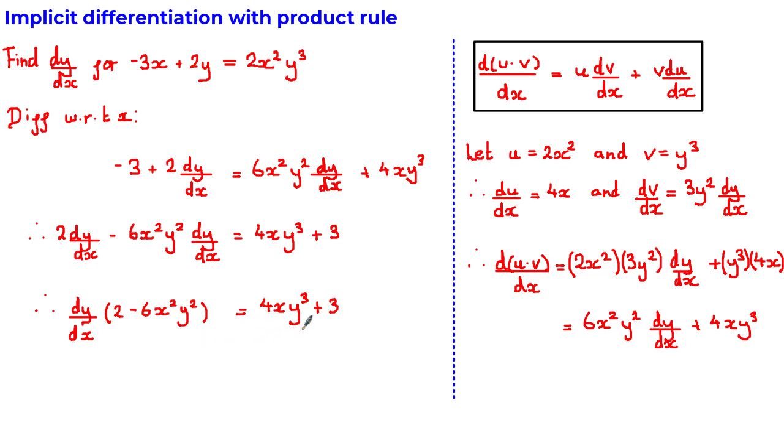And to find dy by dx, all we need to do is divide both sides of the equation by 2 minus 6x squared y squared to get dy by dx is equal to 4xy cubed plus 3 over 2 minus 6x squared y squared.